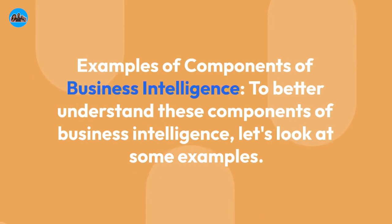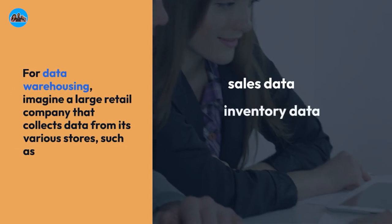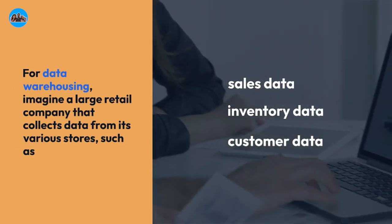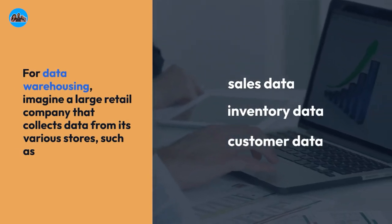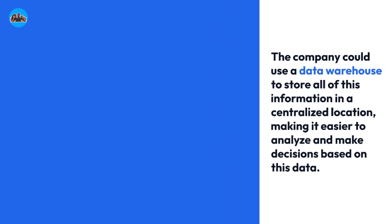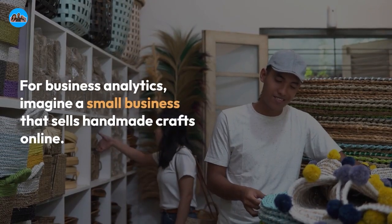To better understand these components of business intelligence, let's look at some examples. For data warehousing, imagine a large retail company that collects data from its various stores. The company could use a data warehouse to store all of this information in a centralized location, making it easier to analyze and make decisions based on this data.